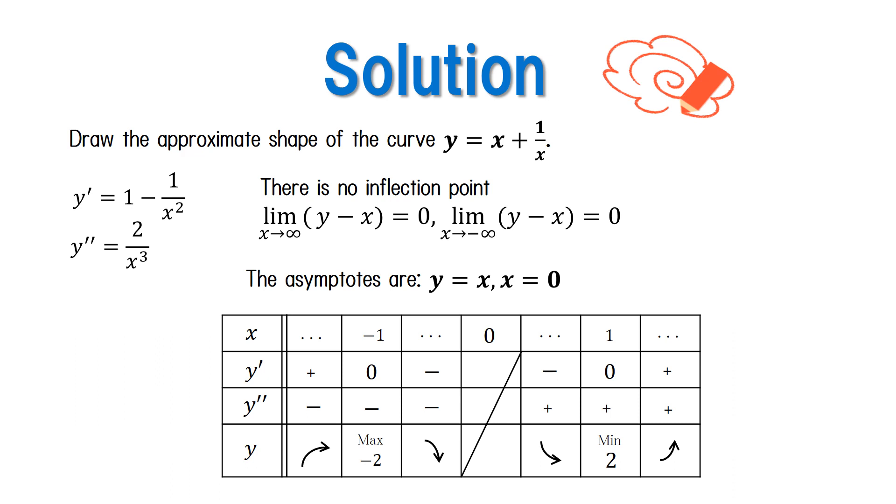Now let's check our answers. The first derivative, second derivative, inflection point, increase and decrease table, and asymptote of a function each look like this.